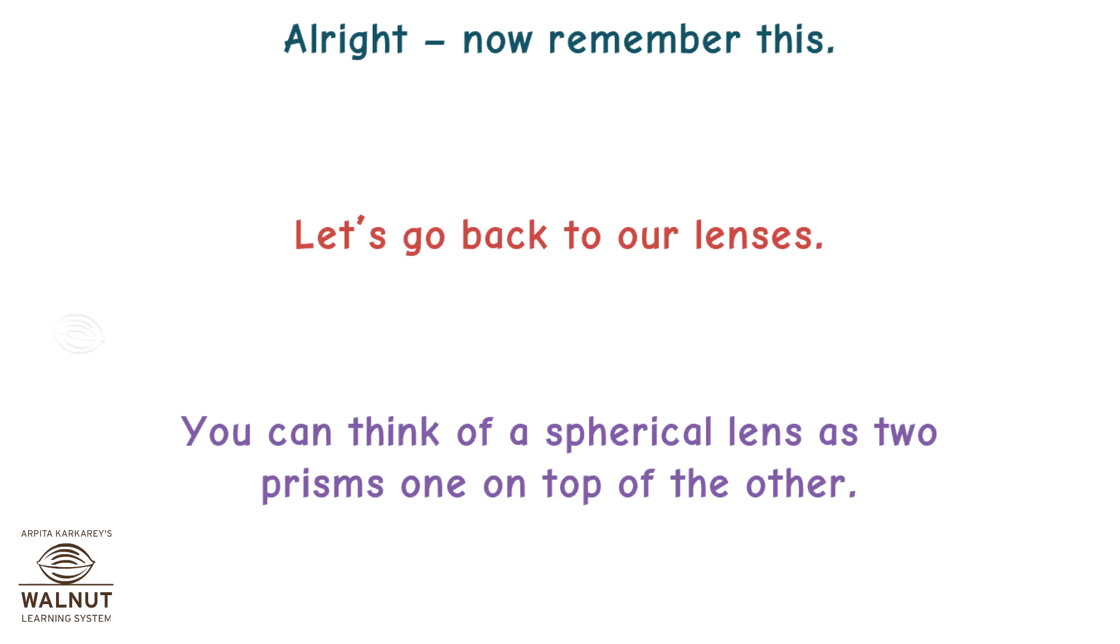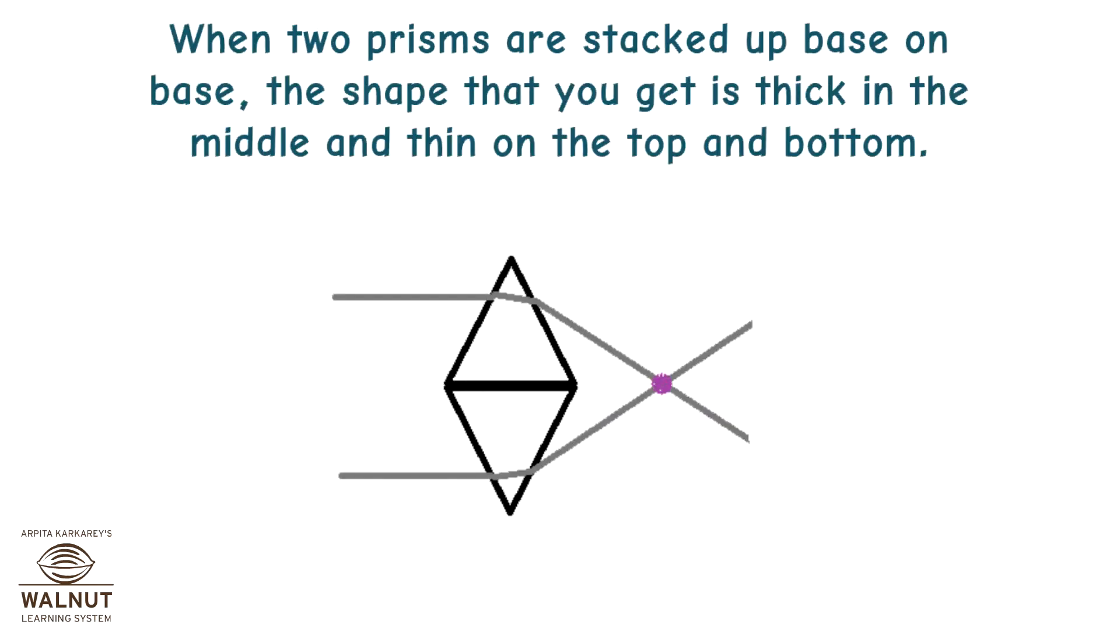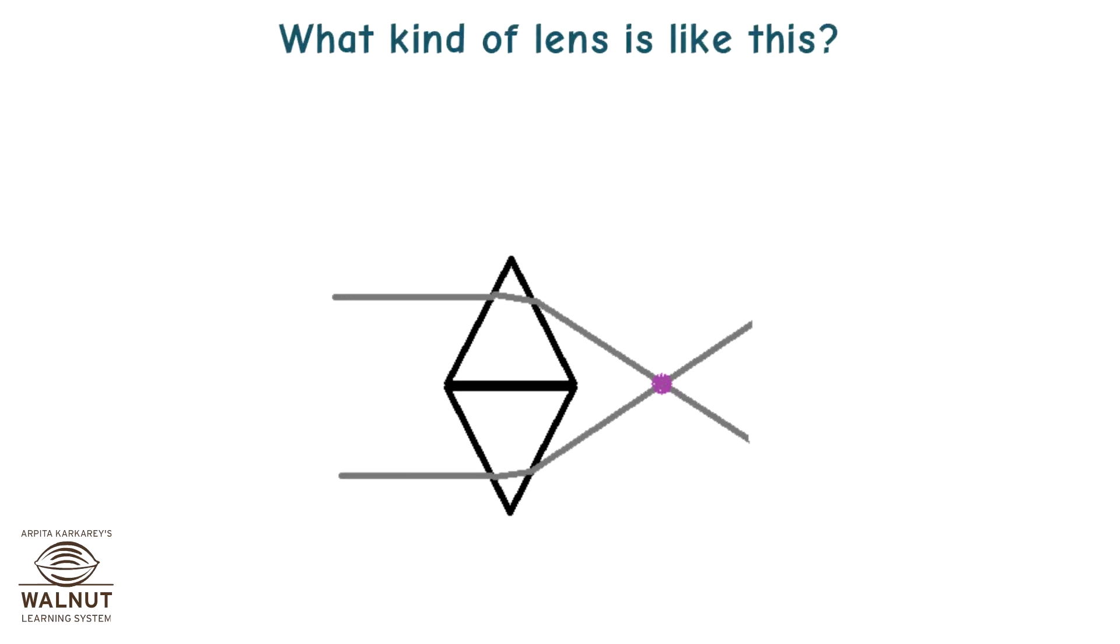You can think of a spherical lens as two prisms, one on top of the other. When two prisms are stacked up base on base, the shape that you get is thick in the middle and thin on the top and bottom. What kind of lens is like this? A convex lens.